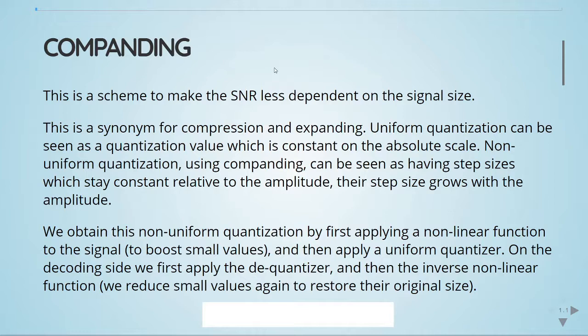It means compression and expanding. Uniform quantization can be seen as a quantization value which is constant on the absolute scale. On the other hand, non-uniform quantization using companding can be seen as having step sizes which stay constant relative to the amplitude. Their step size grows with the amplitude.